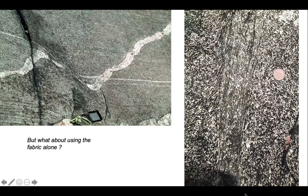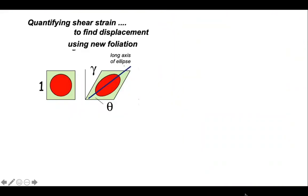But many shear zones don't have pre-existing markers crossing them. So in these situations, what about using the fabric that defines the shear zone alone? So these are new shaped fabrics, such as we see on the right. So let's look at this.